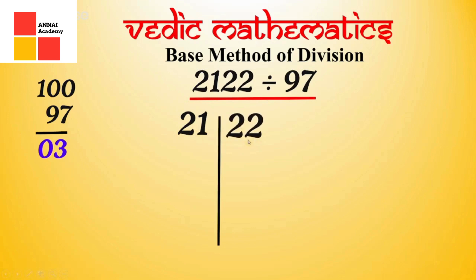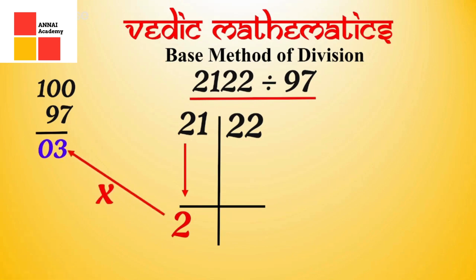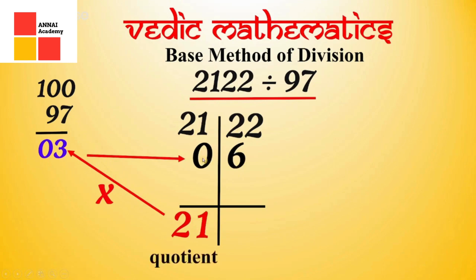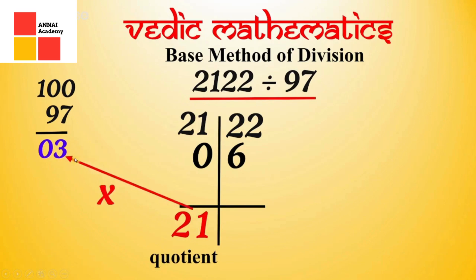Why did we give a gap of 2 numbers here? Because we have to divide it by a 2-digit number. Now we will note the first digit of this number, which is 2, as it is. We will multiply 2 by the given complement: 2 into 03 will give 06. Write 06 — below the first part is 0 and below the second is 6. Before adding, we will also multiply 1 by 03, giving 03. Write it below. Now if we add 2 and 6, we get 8. If we add 2 and 3, we get 5. So your remainder will be 85.